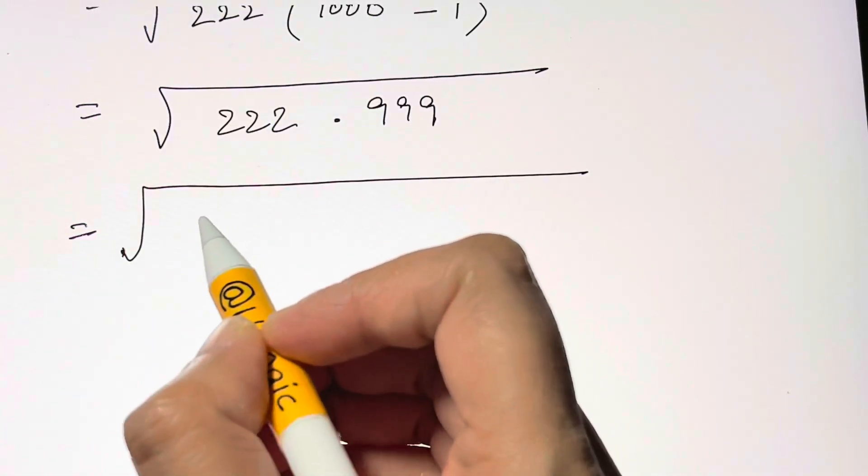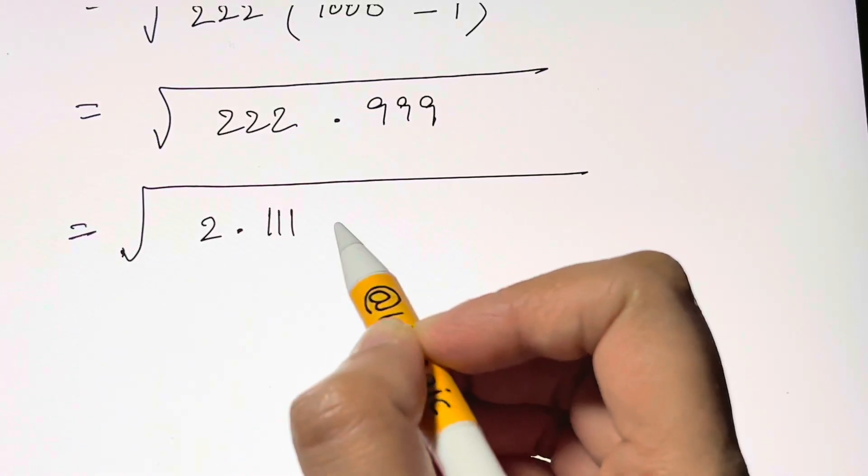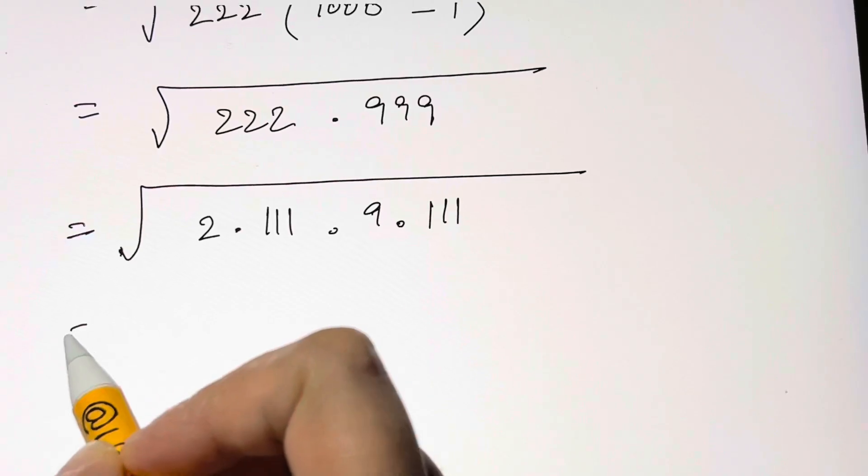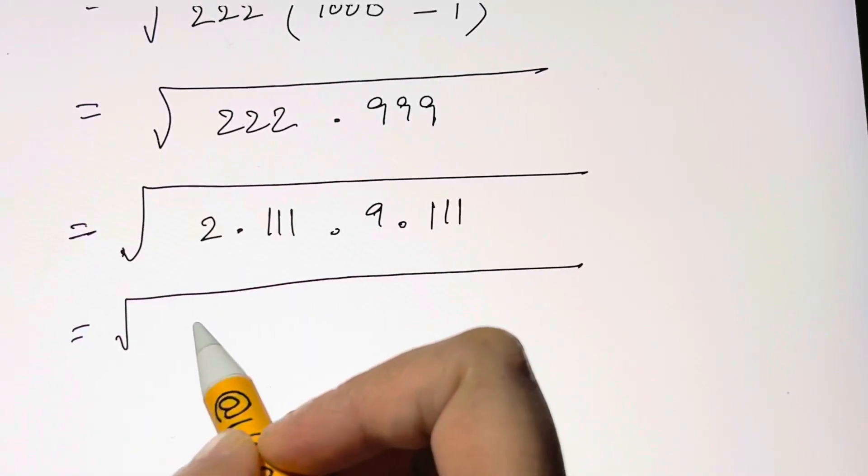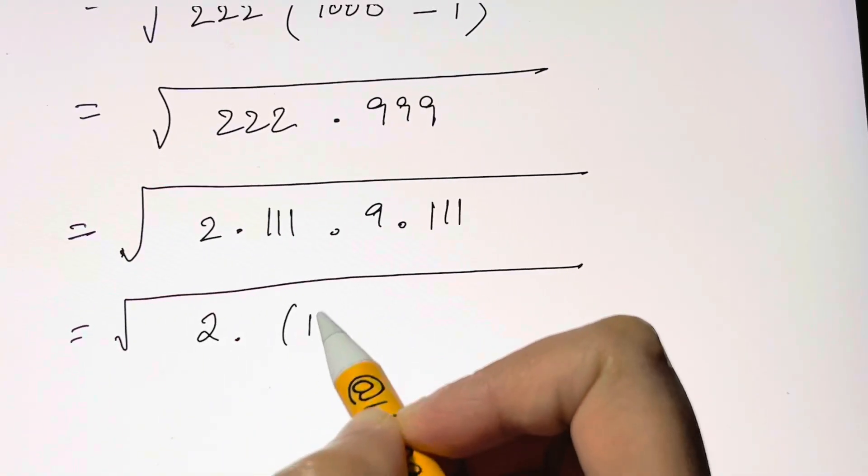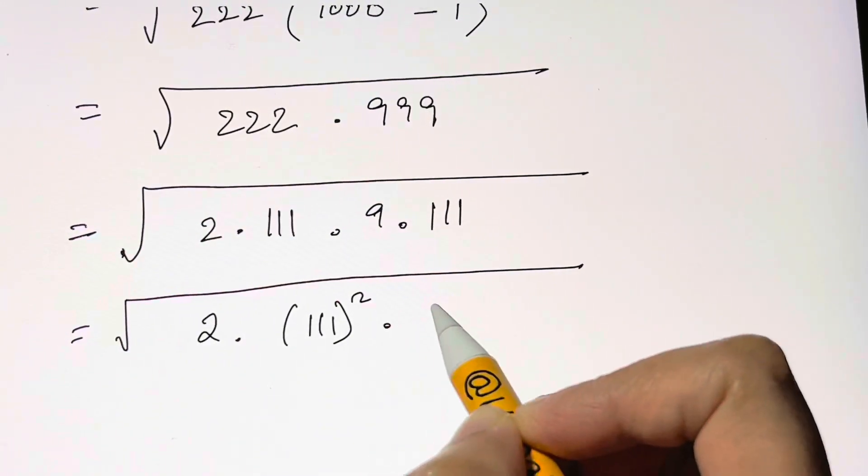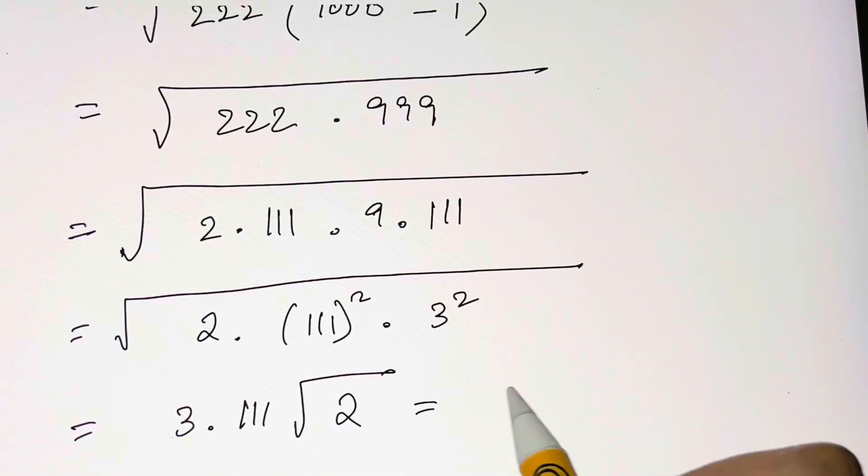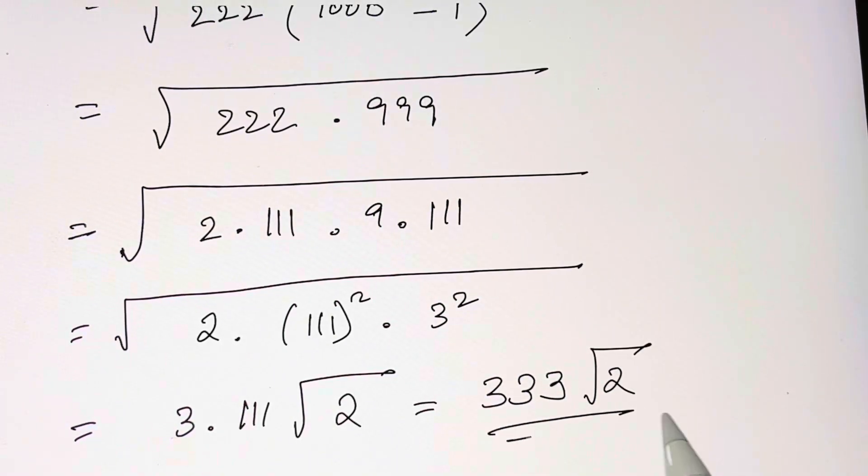You can write it as under the root 2 times triple 1 times 9 times triple 1, and that's equal to under the root of 2 times triple 1 squared. And that's equal to 333 times 3 root of 2. That's it, that's your answer.